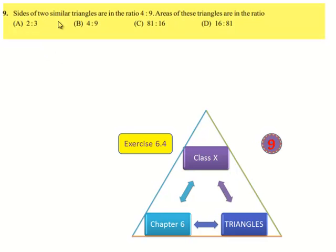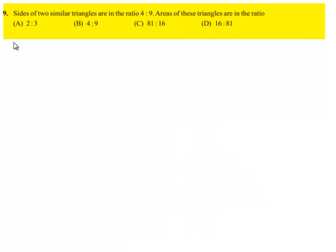Moving on to the 9th question. Sides of two similar triangles are in the ratio 4 is to 9. Then area of these triangles are in the ratio.